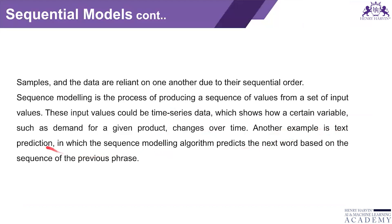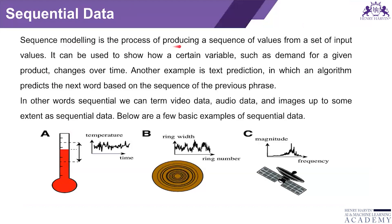Another example is text prediction, in which the sequence modeling algorithm predicts the next word based on the sequence of previous words. A sequence model is the process of producing a sequence of values from a set of input values — for example, temperature, ring width, ring number, magnitude, or satellite data. It can be used to understand how certain values change over time and for predicting the next word based on the previous phase.